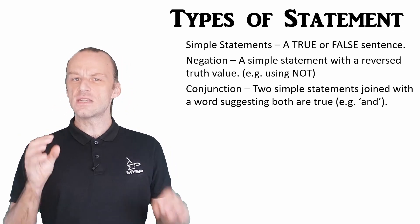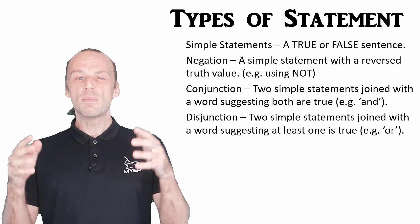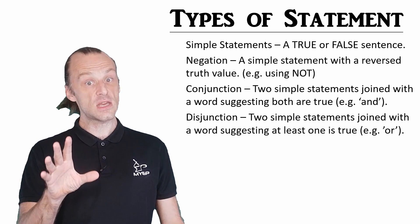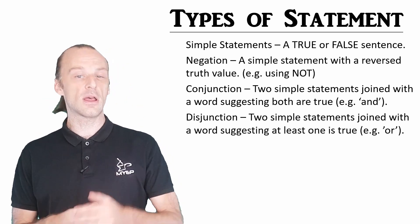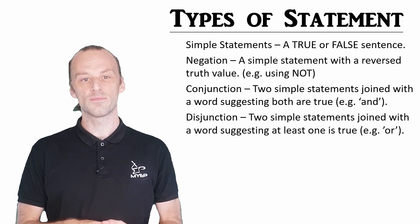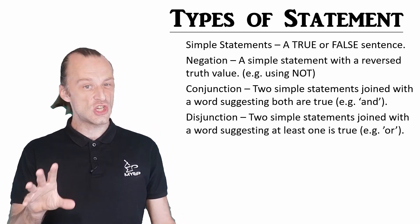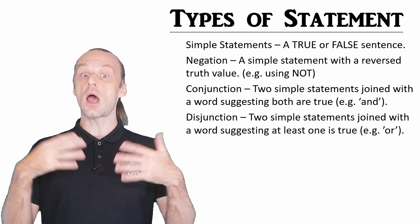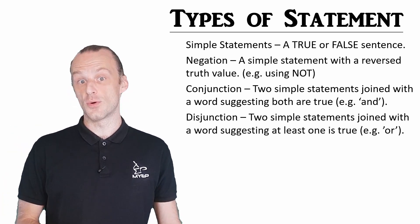Next, there is a disjunction. These again are two simple statements, but they're connected so that at least one is suggested to be true, probably using the word or. There are two types of conjunction, but we'll come back to those shortly. A side note, but just because a compound statement suggests one or more statements are true, it doesn't mean they actually are true. We have to decide after that whether they are true or not.